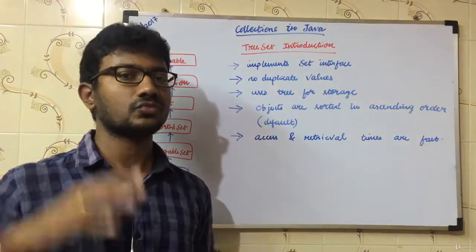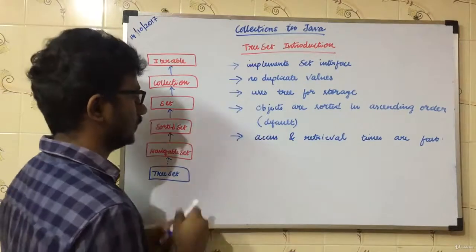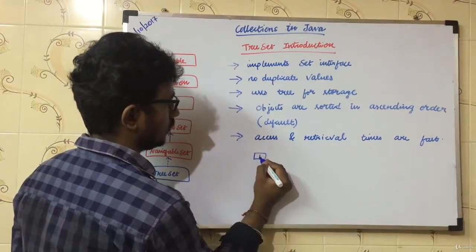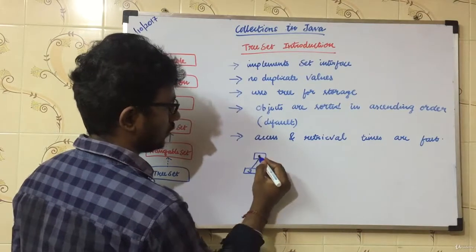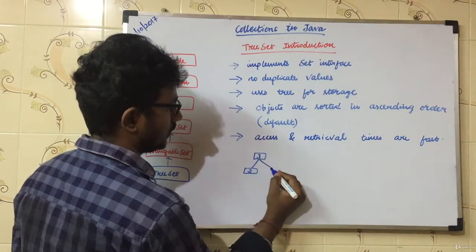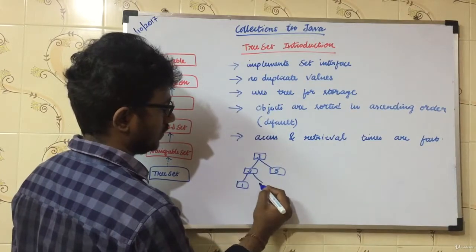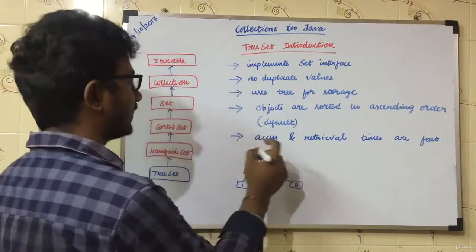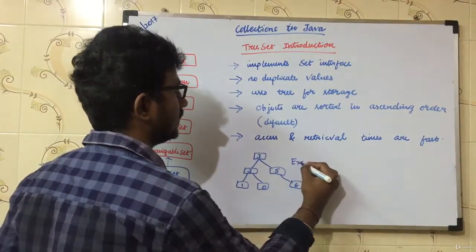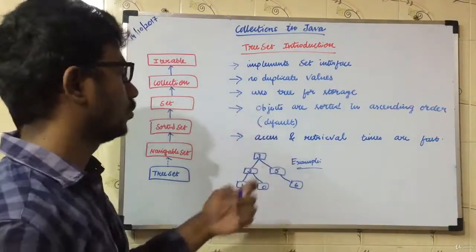Tree has a root node. If you want to use the example node, you can use the example node. 1, 2, 3, 5, 10, 6. 1, 2, 3, 5, 10, 6.